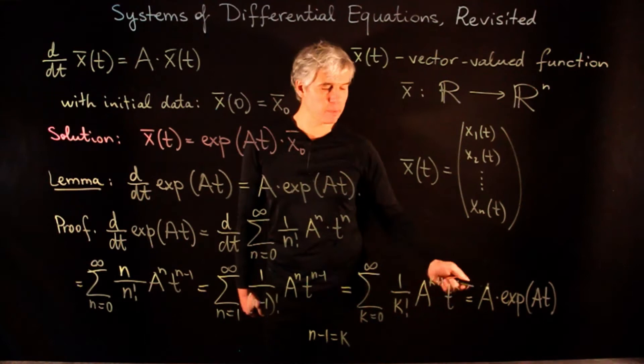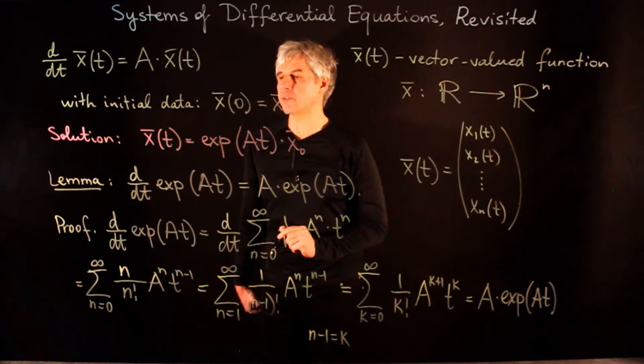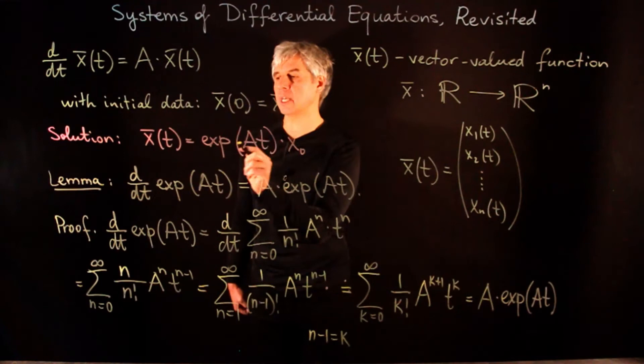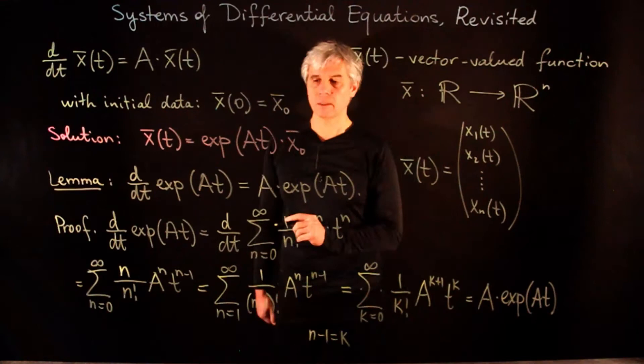If we differentiate the expression x(t) = e^(At) x0 with respect to t, then by this lemma we get an extra factor of A, so the result equals A times x(t). We see that this expression satisfies the system of linear differential equations. Moreover, substituting t = 0, the exponential of a zero matrix is the identity matrix, so we get x(0) = x0, confirming the initial data.